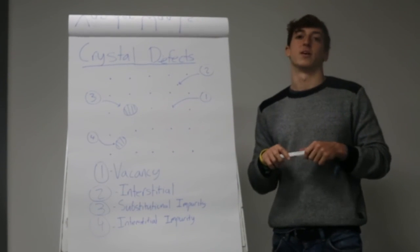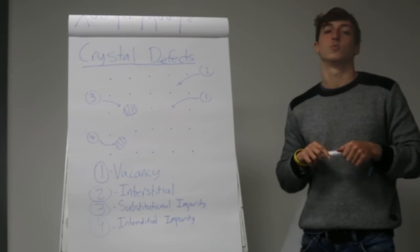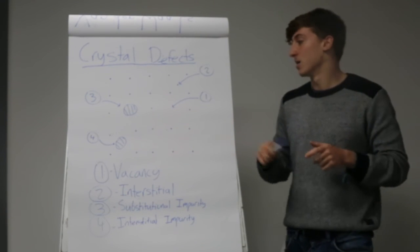So now we're moving on to crystal defects. First of all, we have a vacancy, which is an atom missing from a lattice site, as seen in number 1.